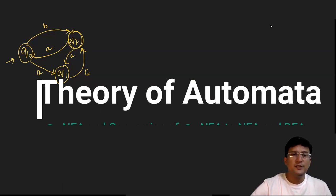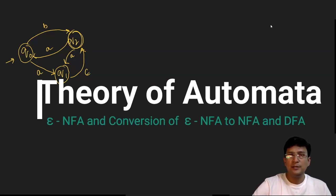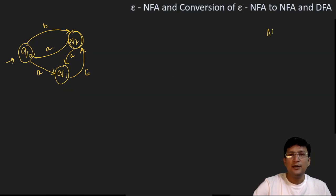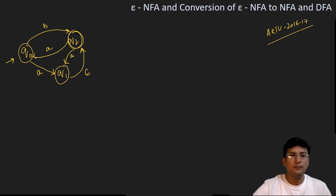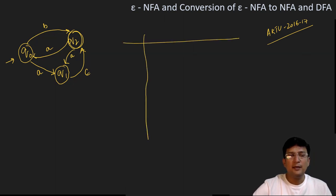Hello everyone. This is a question which has been asked in the AKTU examination 2016-17, and we are given an Epsilon NFA and we have to convert this to the DFA. For the conversion of the Epsilon NFA to the DFA, we will first have to convert this to NFA. I hope you must have seen my previous lectures where I converted the given Epsilon NFA to NFA. We will follow the same practice for this question also.